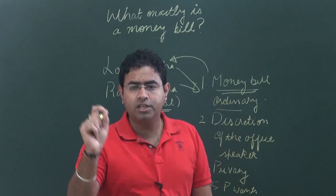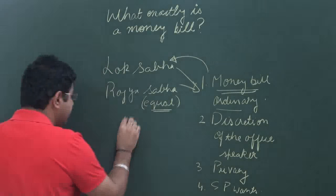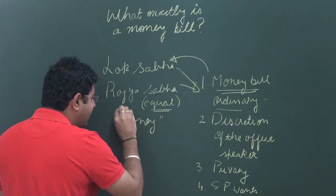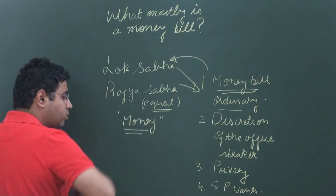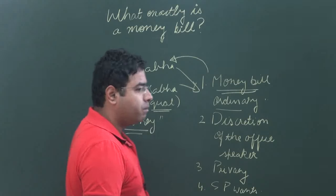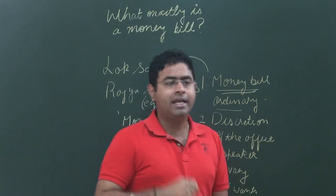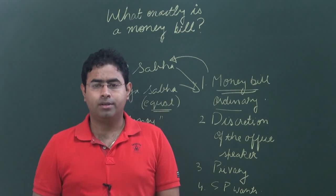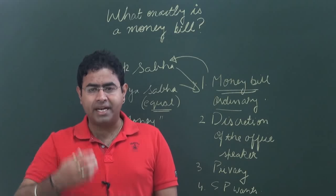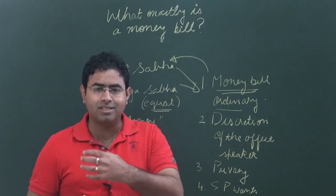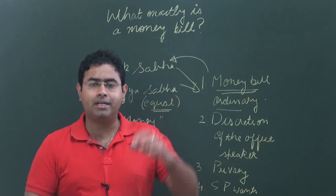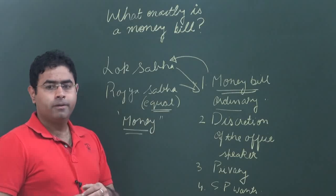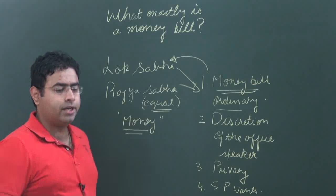When it comes to the Aadhaar Bill, in its modified form it was introduced by the Narendra Modi government as a money bill. It was introduced as a money bill because the Narendra Modi government lacked the requisite majority in Rajya Sabha. So in order to make it easy to pass this bill from Parliament, they introduced it in the form of a money bill.